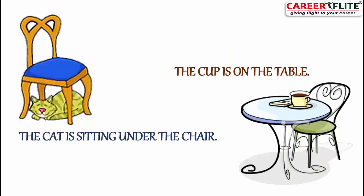Here we have two examples. The first is: 'The cup is on the table.' Here, 'cup' is the noun and 'table' is another word in the sentence — also a noun. The word 'on' is the connector here; it connects the table with the cup. That is why 'on' is a preposition.